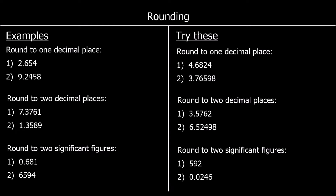Rounding to one decimal place is the same. This time we want one number after the decimal point, so we look at the second decimal place. If it's 5 or above, round up. So it is 5 or above this time, so it's closer to 2.7 than it is to 2.6. So 2.6 rounds up to 2.7.